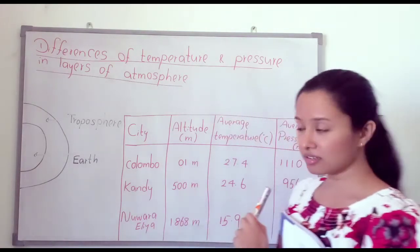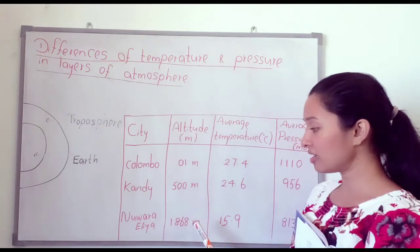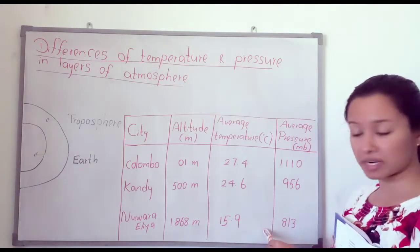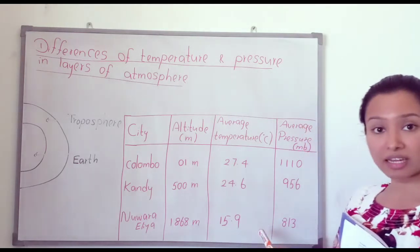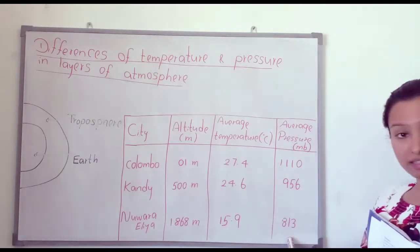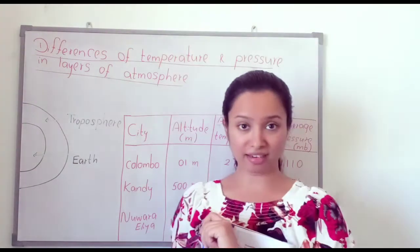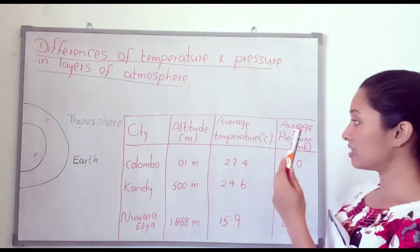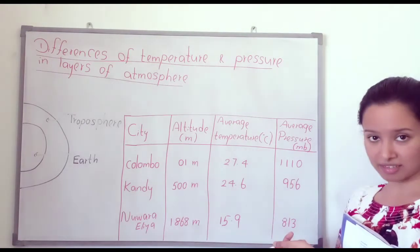Coming to Nuwara Eliya, the altitude is 1868 meters. The temperature has decreased further to 15.9°C, and the average pressure has also decreased to 830 millibars. So we can realize that when altitude increases, both average temperature and pressure decrease.